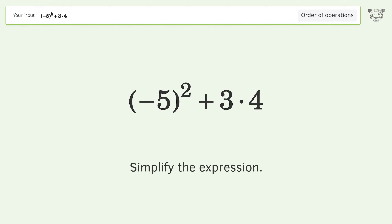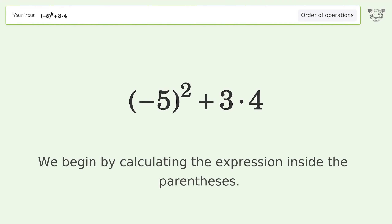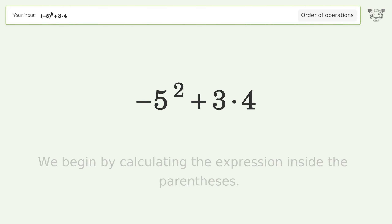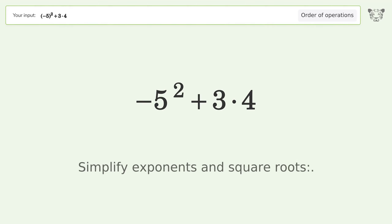Simplify the expression. We begin by calculating the expression inside the parentheses. Simplify exponents and square roots: negative 5 squared equals 25.